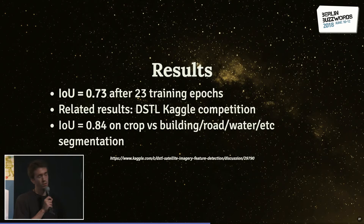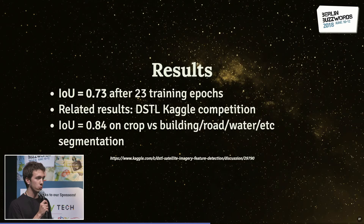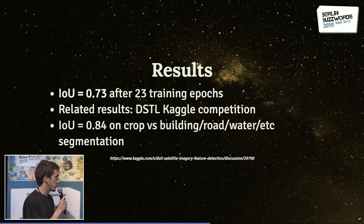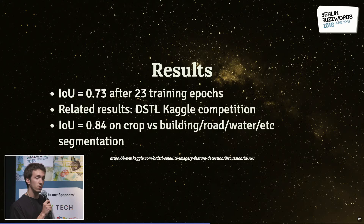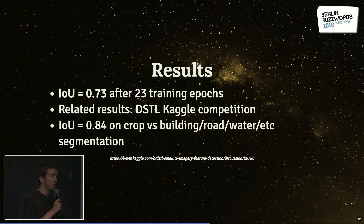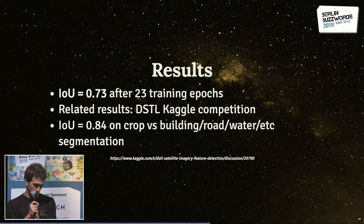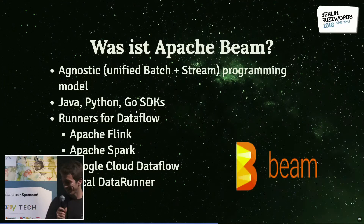The results: we got an intersection over union score of 0.73 after training for 20 epochs. For context, 0.5 was once considered a good result, and now 0.6 is the standard. Comparing with state-of-the-art, the most similar benchmark is the DSTL Kaggle competition for satellite image segmentation, where the best result was 0.84. However, they were segmenting crops versus buildings or water, while we're segmenting tulip fields from other crops, which is harder to distinguish — so direct comparison is difficult.